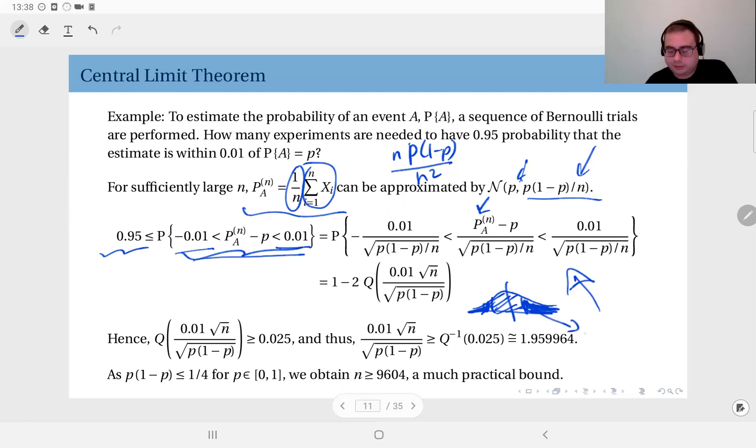And one of these regions can be expressed as the Q function evaluated at this point, which is in fact this value. So I'm subtracting one minus two times the Q function evaluated at this point to obtain this probability.